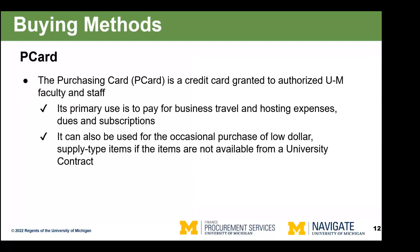Finally, the P-Card. The P-Card is primarily intended for business travel and hosting, although on occasion it can be used for other types of low-dollar supply-type items. If you have a business need to buy something larger or in a category not normally allowed, you can contact Procurement Services to have a buyer review the situation, and if appropriate we will issue an approval for you to use your P-Card or assist you in finding another method.